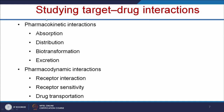The next category is studying the target-drug interaction. Under pharmacokinetic interaction, we study how the drug will be absorbed, its distribution, biotransformation, and excretion. Under pharmacodynamic interactions, we study how the drug interacts with receptors, its sensitivity, whether it binds only to cancer cells or to normal cells as well, and how the drug is transported.